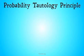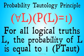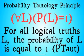As we remember from previous videos, we have something in probability and logic known as the probability tautology principle. Basically, for all L, where L is a law of logic, the probability of L is equal to 1. Or, for all logical truths, the probability of those logical truths must be equal to 1. That is the probability tautology principle.